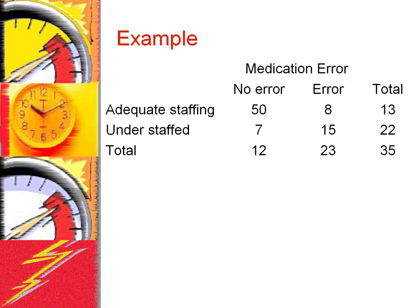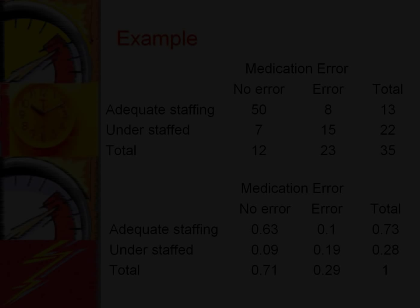Dividing by the total number of visits fits our notion of how probability should be measured — the frequency of observing an event divided by the total number of possibilities. Here, the total number of possibilities is the number of visits. Dividing by this number guarantees that we have a probability function that satisfies the four axioms mentioned in the first lecture on probabilities.